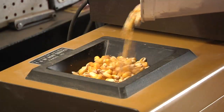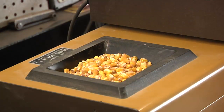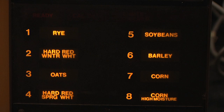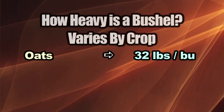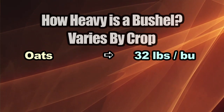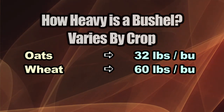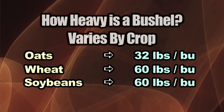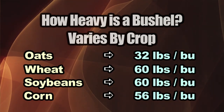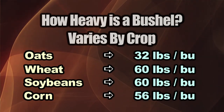Today, it is all obviously done by weight, and a bushel just has a standard weight for each different crop. For example, oats is 32 pounds for a bushel. Wheat would be 60 pounds for a bushel, just like soybeans. Corn, on the other hand, that's 56 pounds, so there is a little bit of difference.